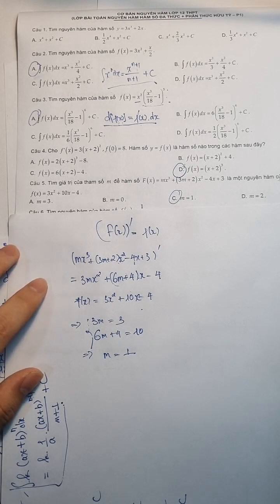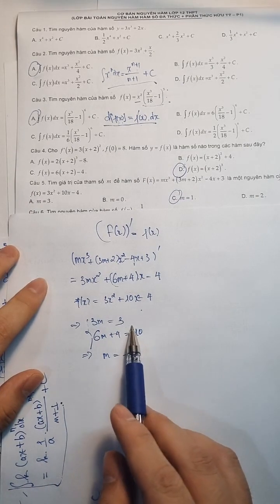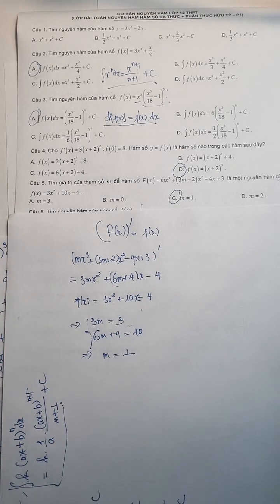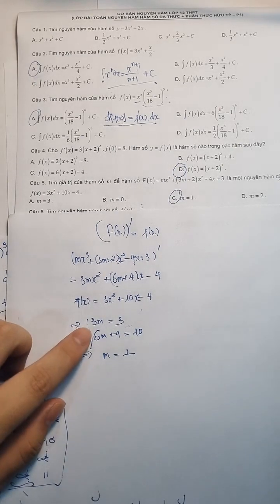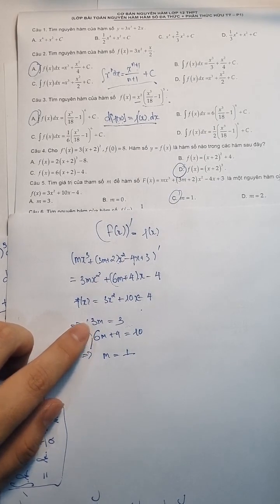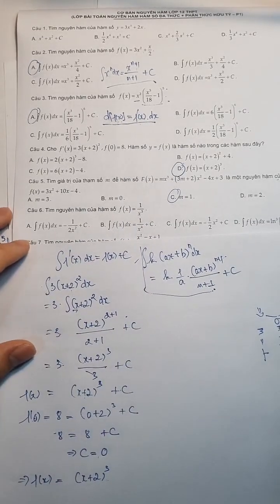Sao lại ra 1 á? 3m bằng 3 đúng không? Thì suy ra m bằng 1 thôi. Cái này dễ mà được chưa? Cái này suy ra m bằng 1 thôi. Đến chỗ này suy ra được rồi. Đáp án chính xác là C nhé.